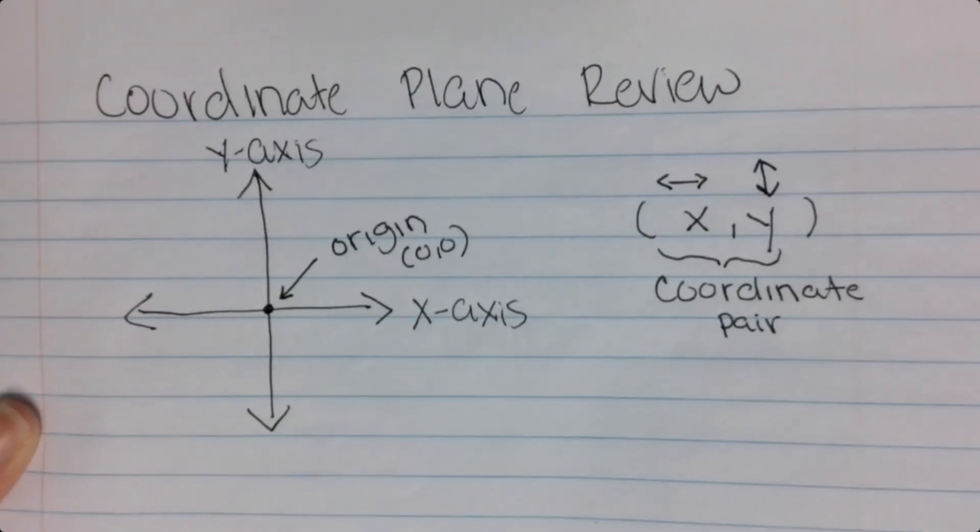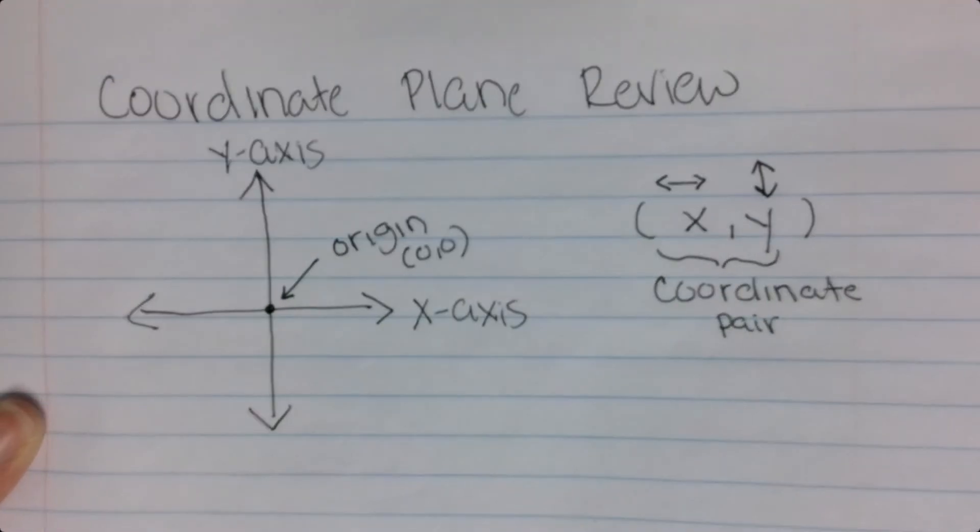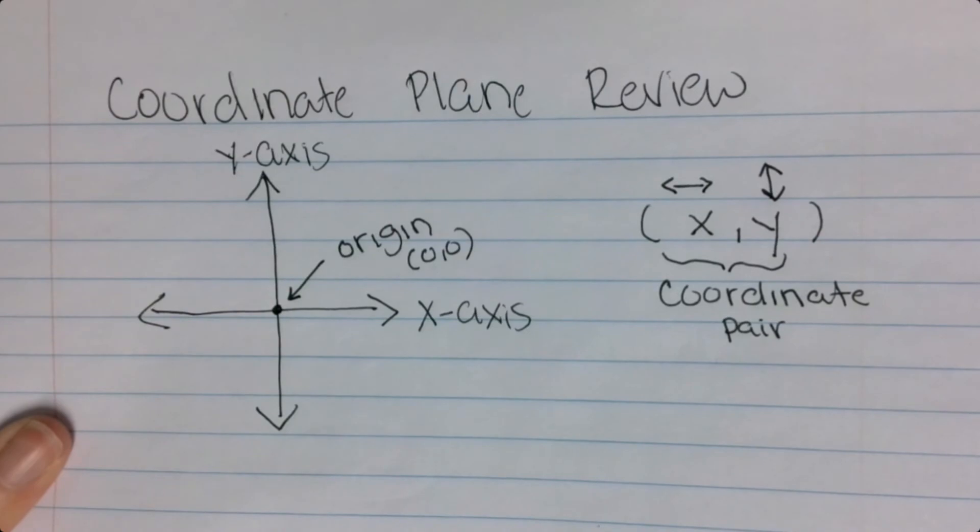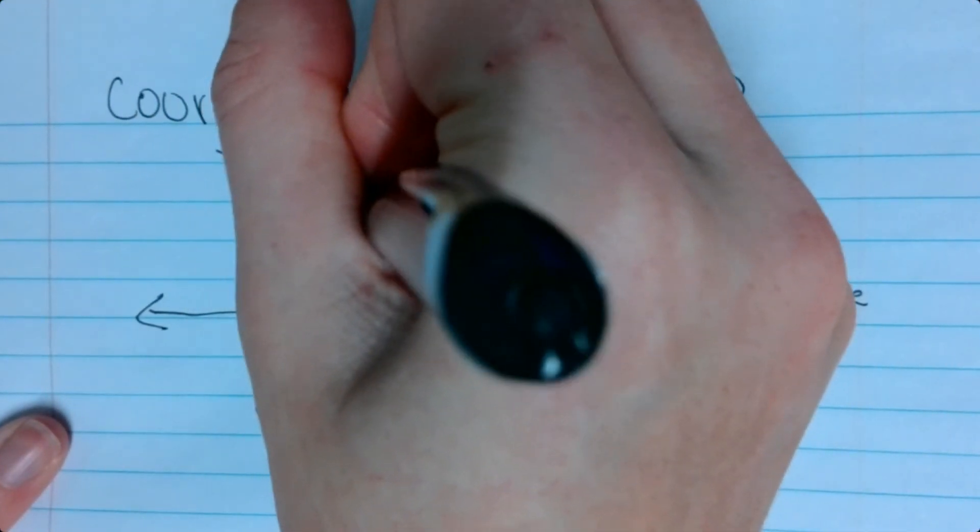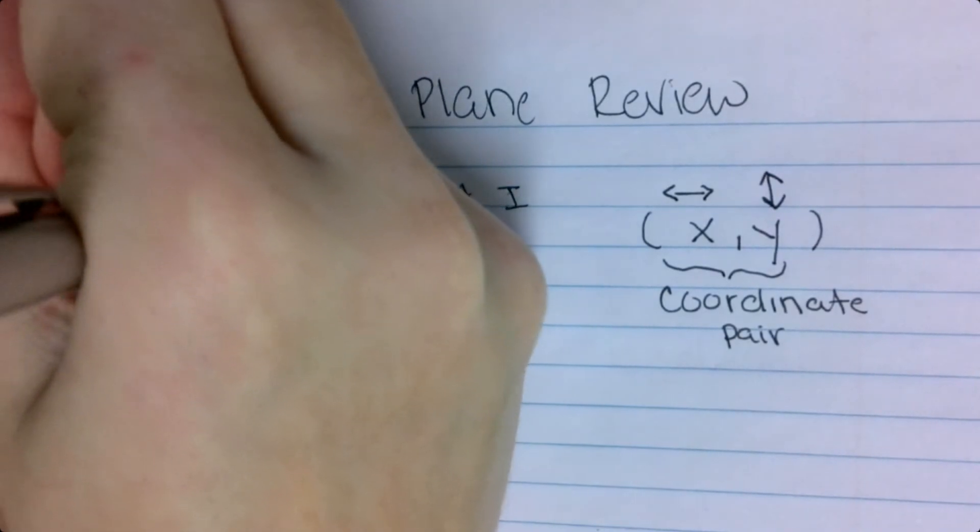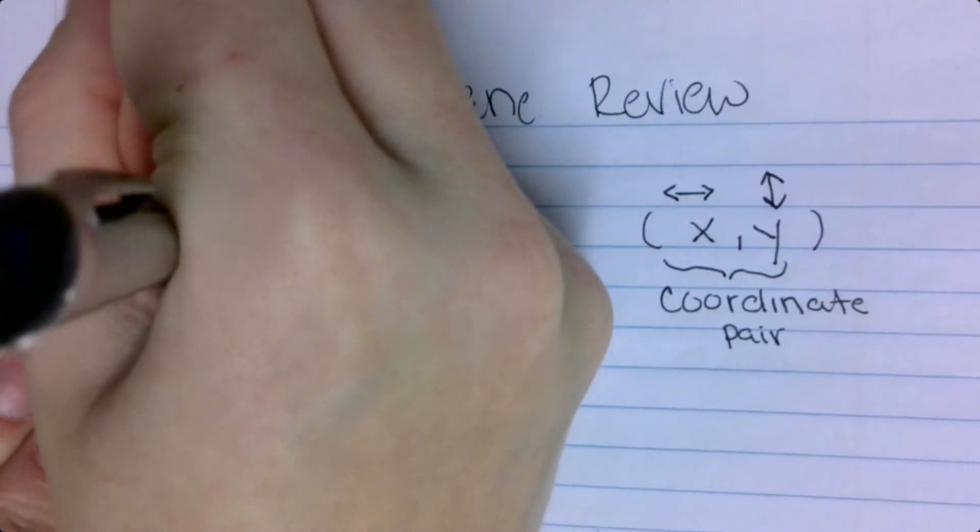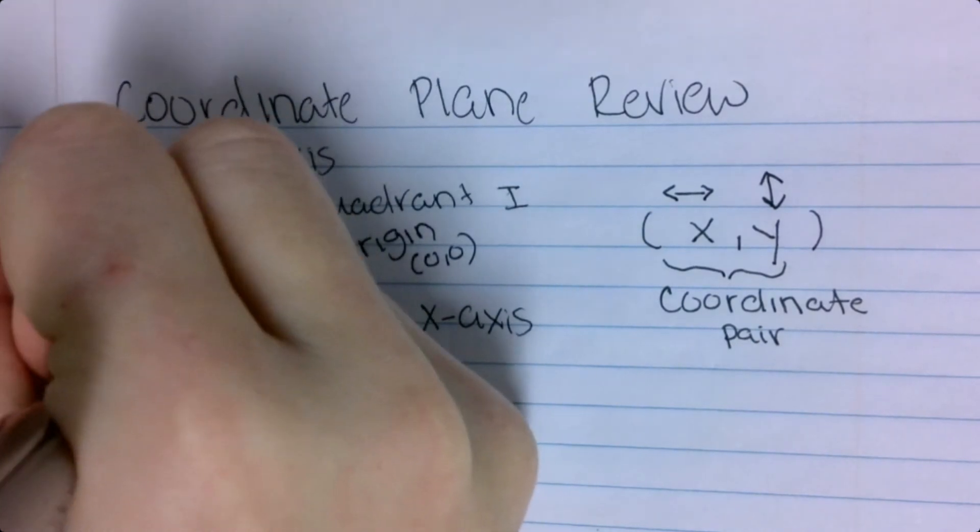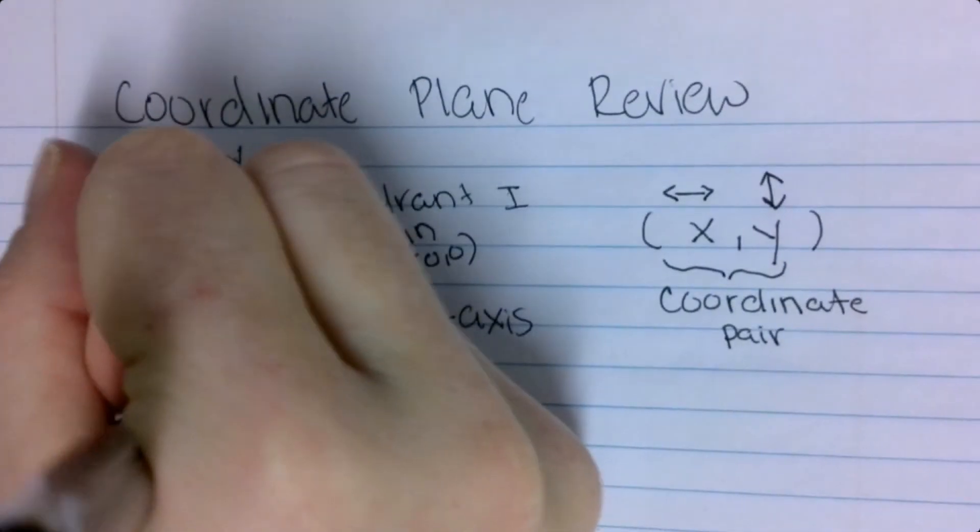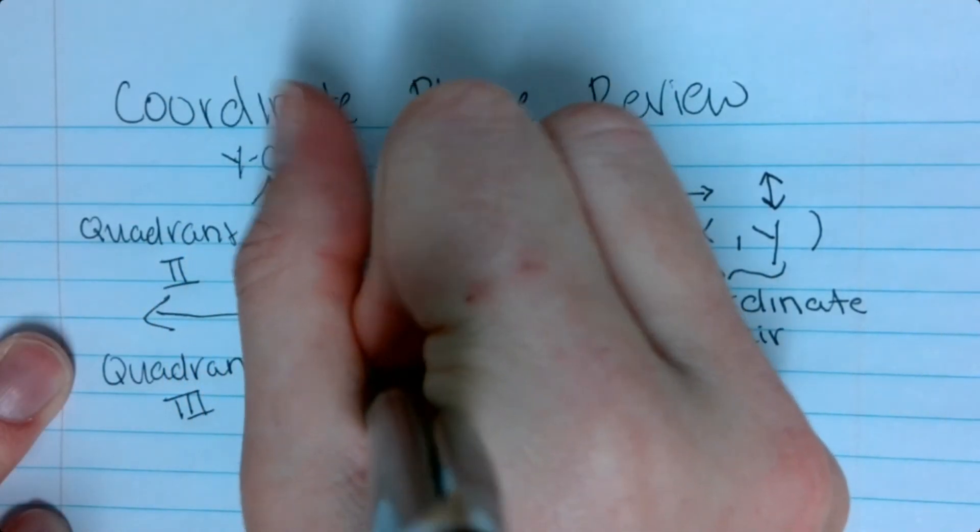The other thing that I want you to know is that these are called quadrants. So this is quadrant 1, this is quadrant 2, this is quadrant 3, and this is quadrant 4.